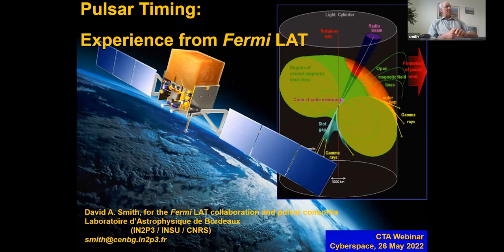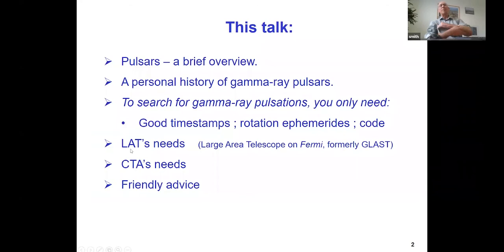Here we have our first slide. We see a little sketch of Fermi on orbit with a large area telescope perched on top of it and a sketch of gamma rays. And so here's one that I'm going to talk about first, of course, a quick review of pulsars.